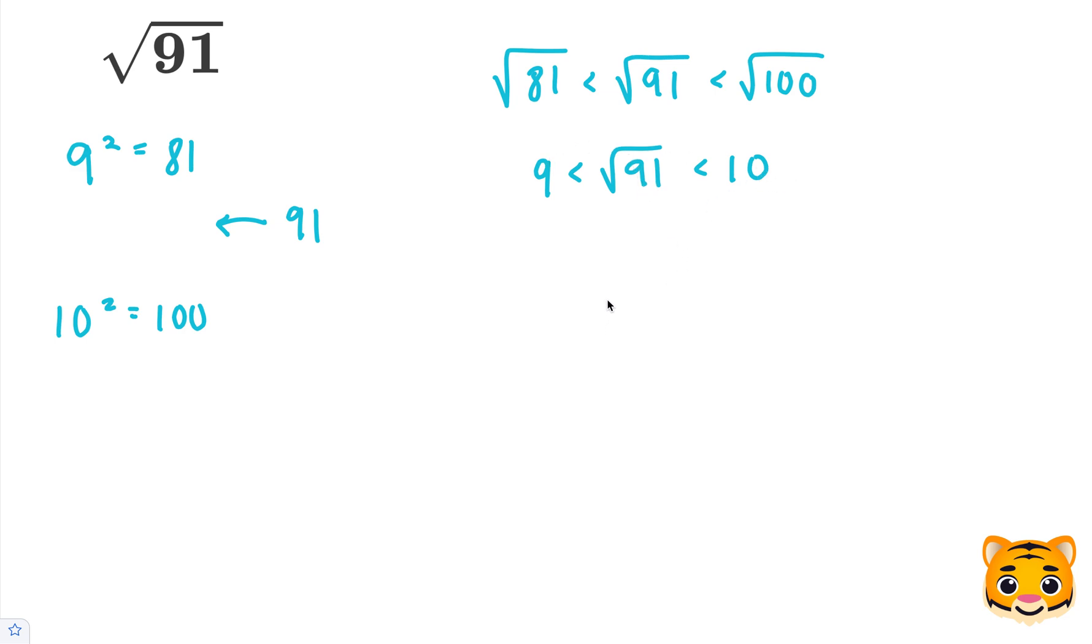To find a tenths place approximation, we can try out values between 9 and 10 and see how close we can get to 91 when we square them. Let's try 9.5 squared.